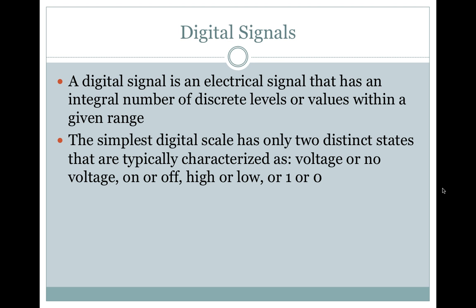Digital signals. A digital signal is an electrical signal that has an integral number of discrete levels or values within a given range. The simplest digital scale has only two distinct states that are typically characterized as voltage or no voltage, on or off, high or low, or one or zero.